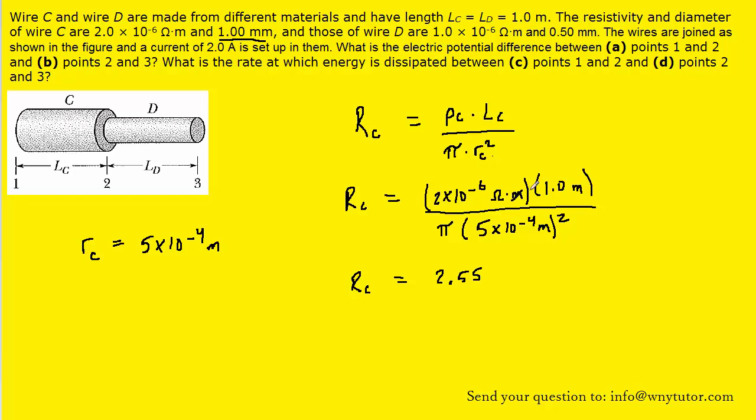So in the numerator, we have meters times meters, which is meters squared. That will cancel with the meters squared in the denominator. That leaves us with the unit of ohms. So this is the resistance of wire C.